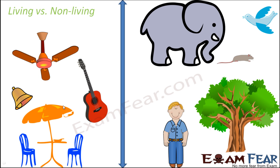On what basis do we decide that these are living and these are non-living? Some of us might say that a guitar doesn't move on its own from one place to another, but an elephant does move, so elephant is living and guitar is non-living. But what about a plant? A plant also doesn't move from one place to another, but we still say it is living.